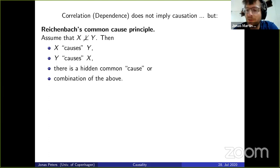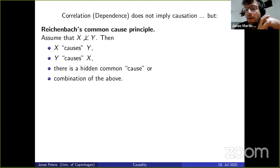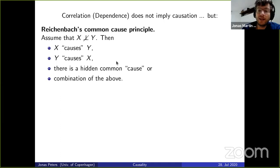There are many examples. Drowning events and ice cream consumption are strongly dependent, but we immediately think there must be an explanation — in this case, it's the summer temperature influencing both. So this would be an example of a hidden common cause. In a way, we are looking for a causal explanation. This means: maybe correlation does not imply causation, but it tells us something about causation.